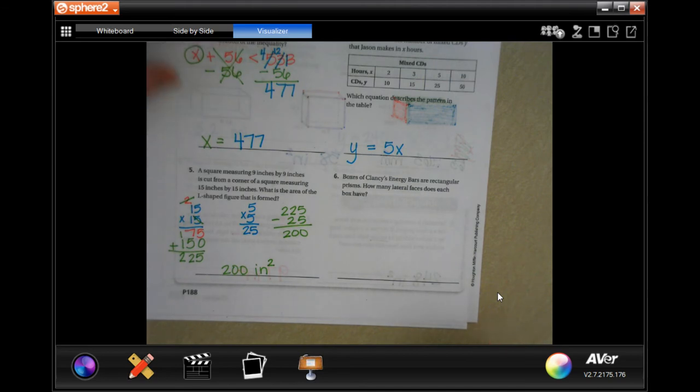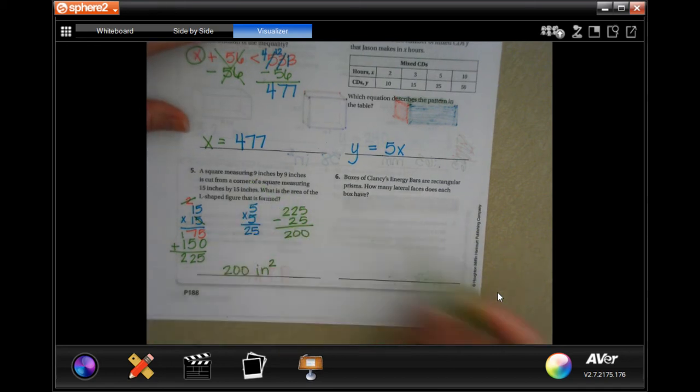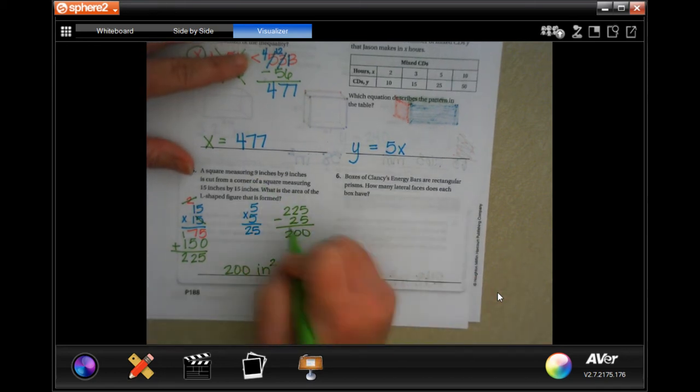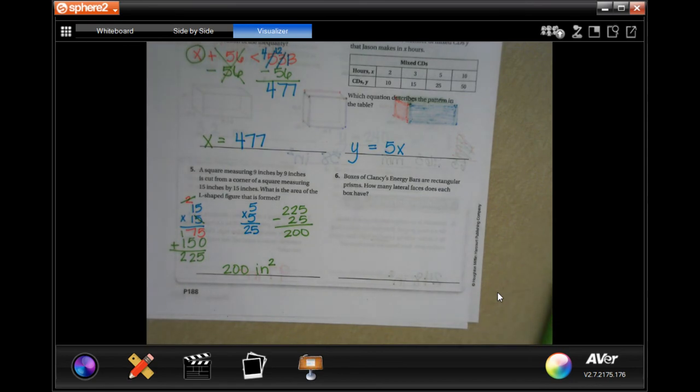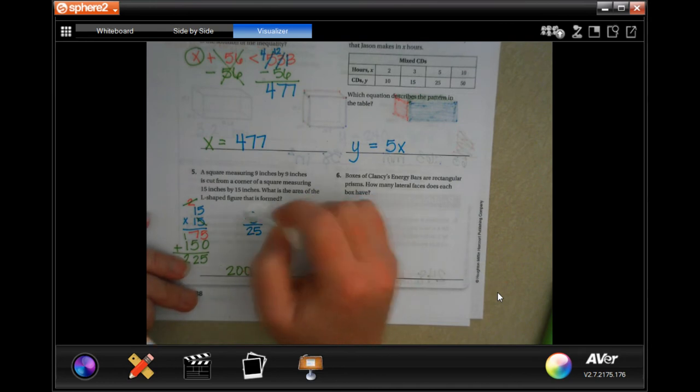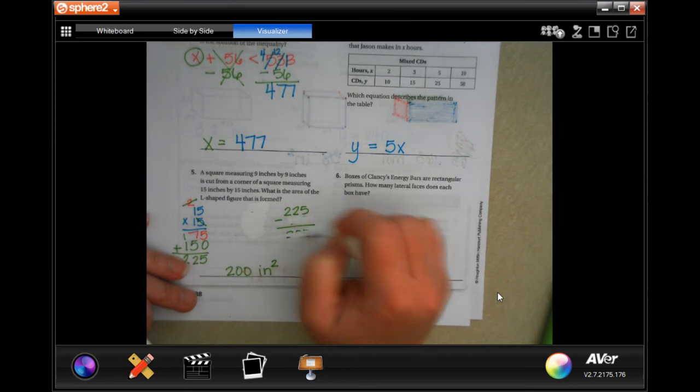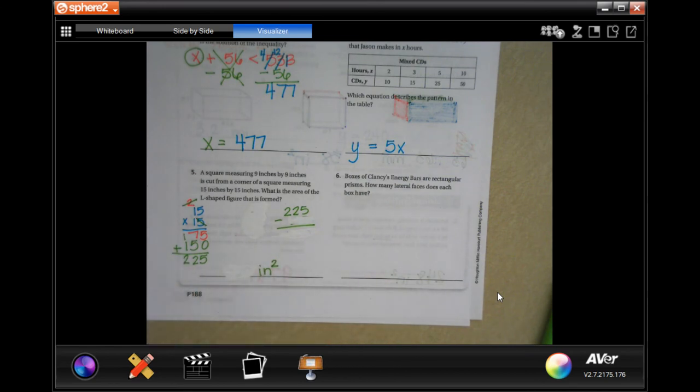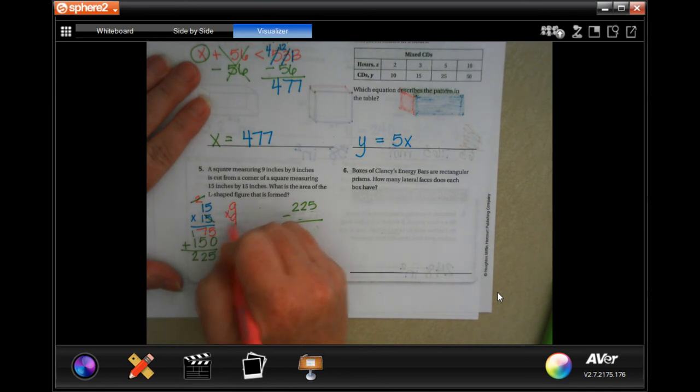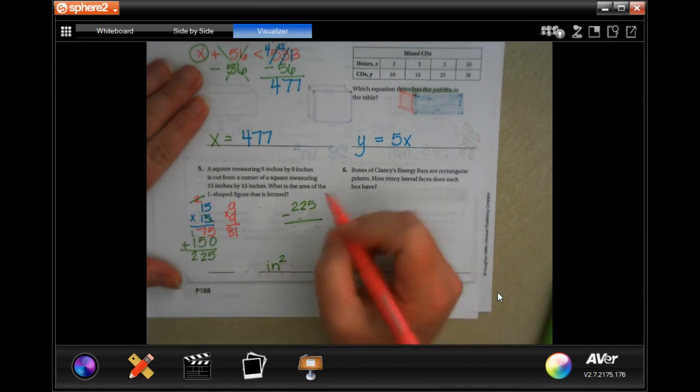Oh, y'all. I totally just did that wrong. I, for some reason, went 5 by 5 instead of that. So, hold on just a second. And I'm going to fix my mistakes with whiteout. So, we're going to take away. This is going to be a 9 by 9. Not a 5 by 5. Sorry, y'all. Now, let's do it right.